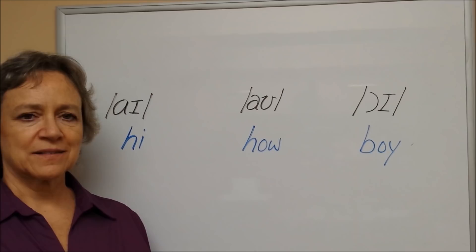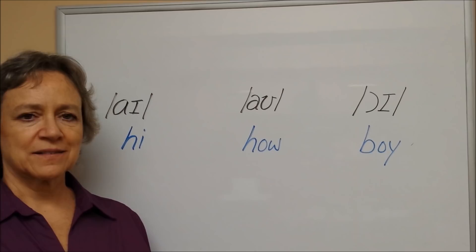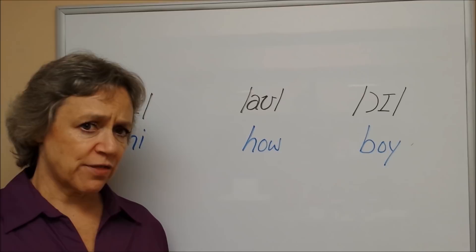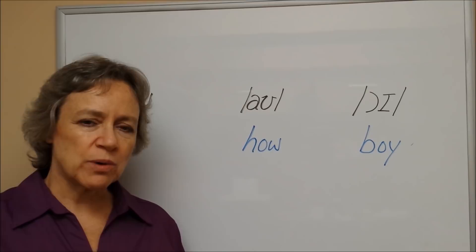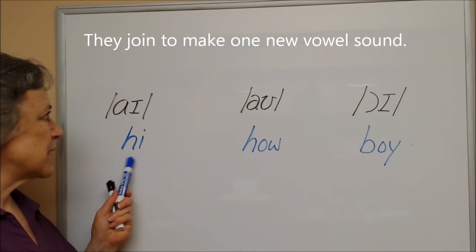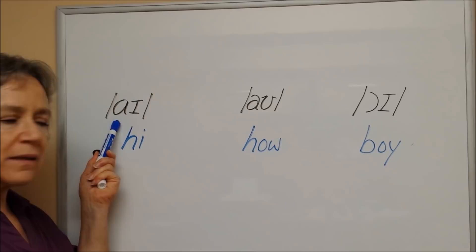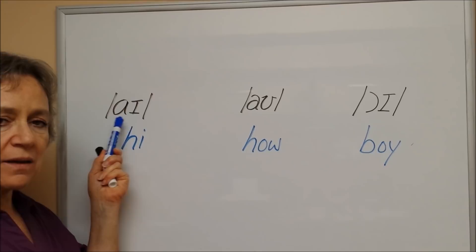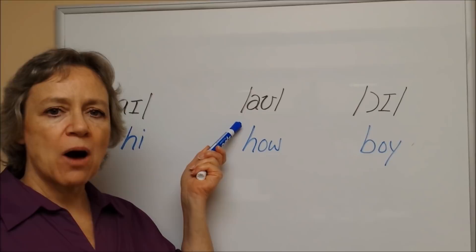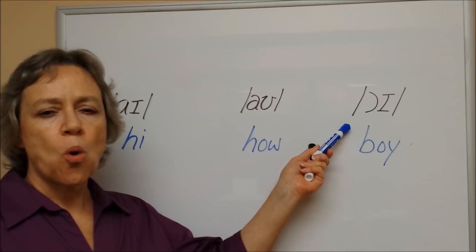We have three other vowel sounds — sometimes called complex vowels or diphthongs. They are made up of the sounds of two other vowels joined closely together: we start with one sound and glide into the next. This one is /aɪ/ — we start with ah and move into i — it sounds like i, as in hi. Then we have ow, as in ow. Then oy, as in boy.